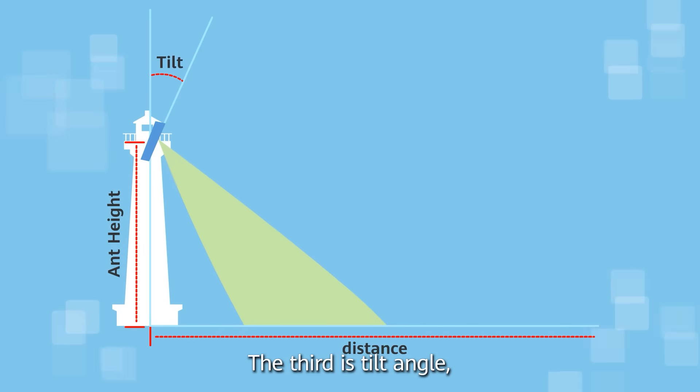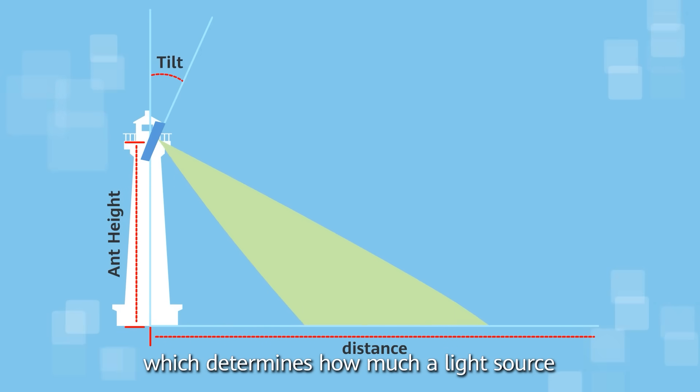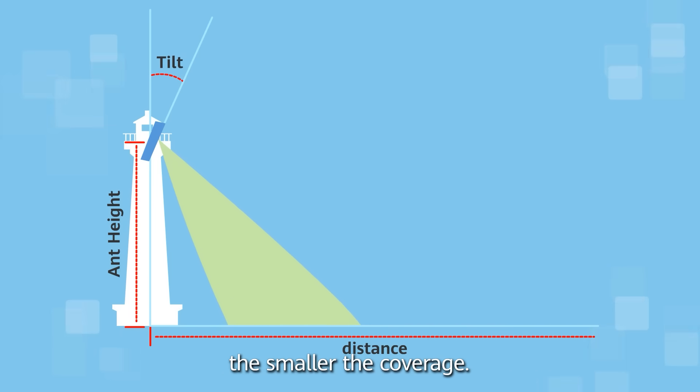The third is tilt angle, which determines how much a light source faces downwards. The larger the tilt angle, the smaller the coverage.